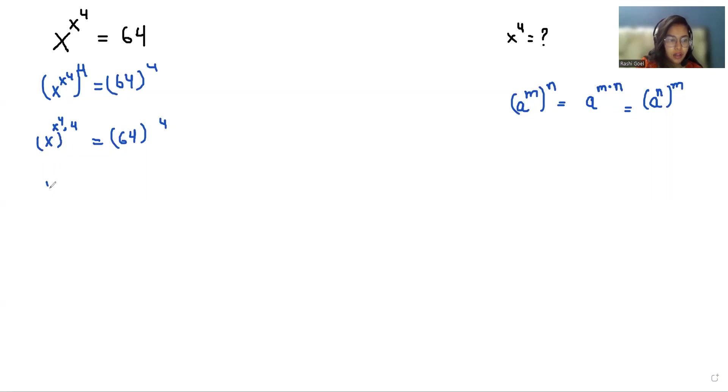Or we can write it as x to the power 4 to the power of x to the power 4 equals 64 to the power 4. Now 64, I can write it as 8 squared.